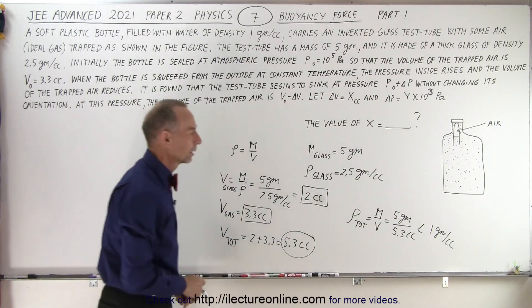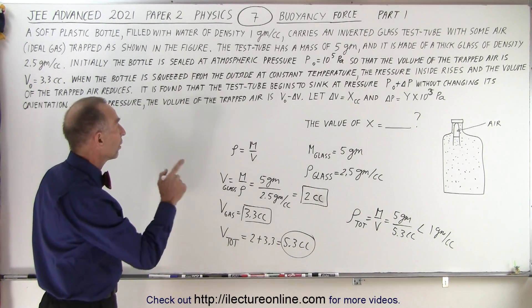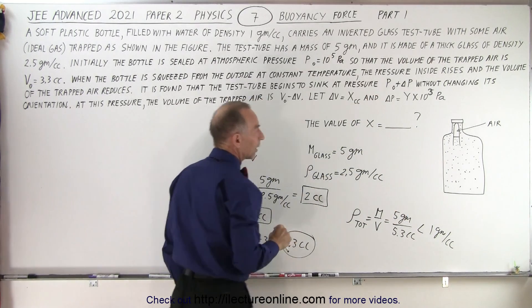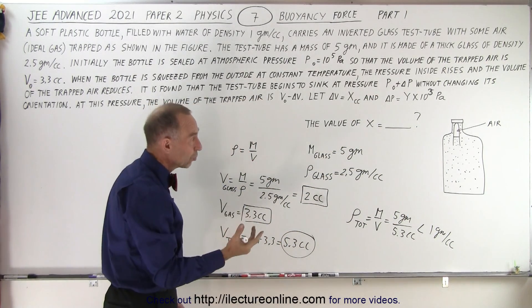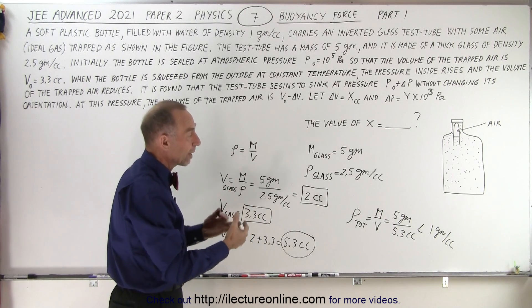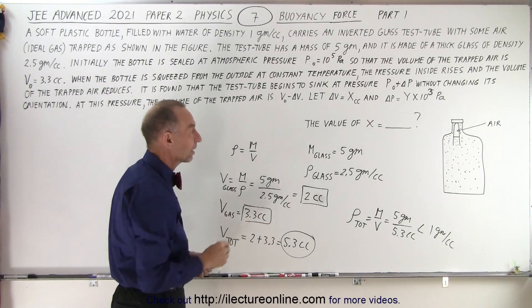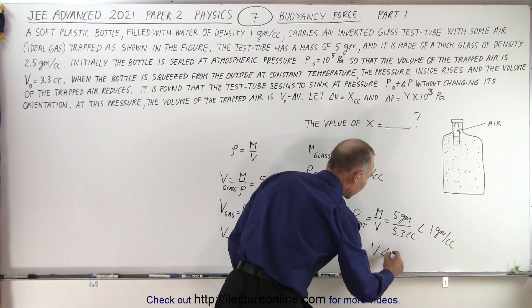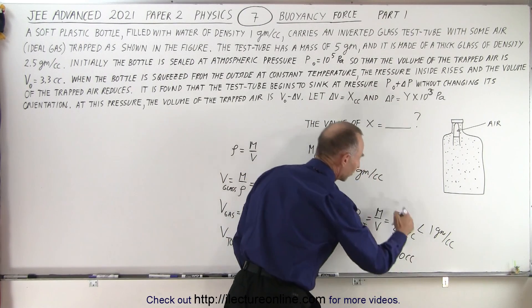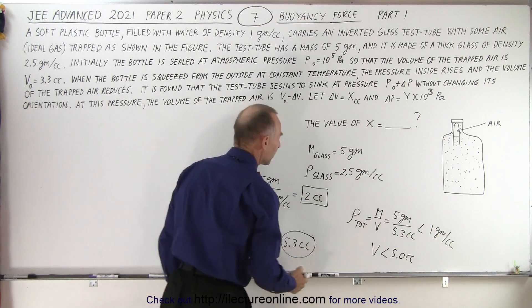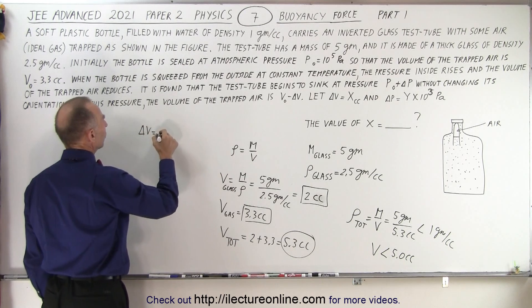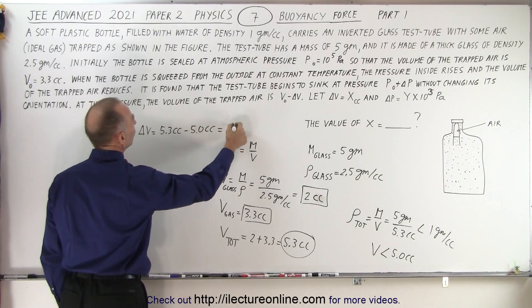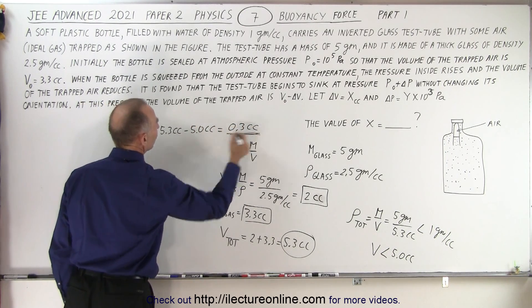Now the question is, what is the value of x, what is the change in the volume that will allow the test tube to start coming down? Well, once the density of the test tube and the gas trapped inside is greater than one gram per cubic centimeter, then it will start sinking down into the water. And of course that requires the volume to be less than 5.0 cc's, because five divided by five gives me one. And so that means that the change in the volume must be equal to 5.3 cc's minus 5.0 cc's, which is 0.3 cc's.